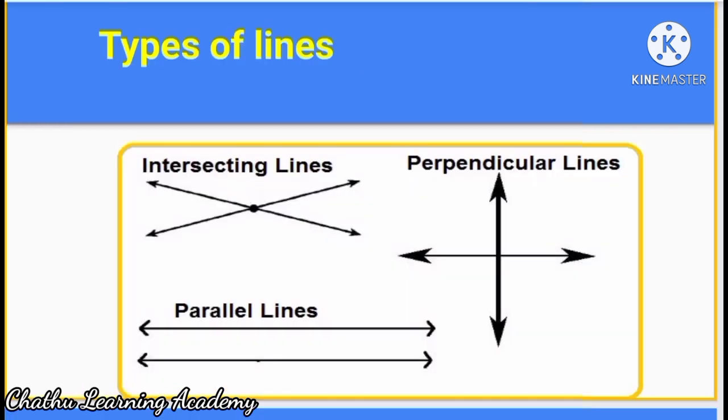Here, you can see three types of lines. First one, intersecting lines. What is the meaning of intersecting? It means they meet at a point. Then these two lines meet at a point.